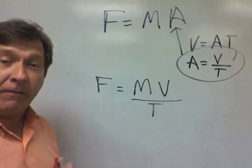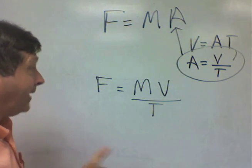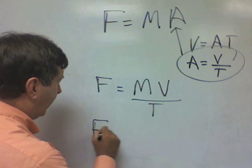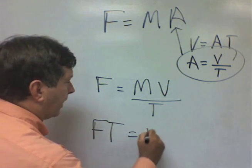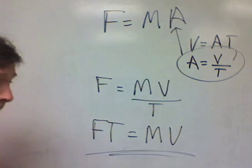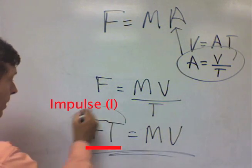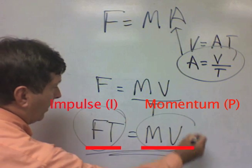Now if I multiply both sides by T, I get FT equals MV. Impulse equals momentum.